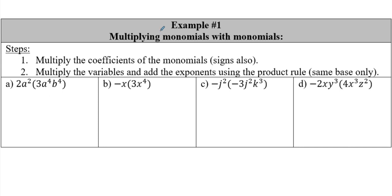Example number one: we already know what a monomial is. We are going to multiply a monomial with a monomial. You've probably done this before - now I'm just throwing in extra coefficients and a couple extra variables. Our steps say the first thing we want to do is make sure you multiply the coefficients of the monomials, and do not forget those signs.